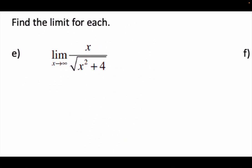Example e: limit as x approaches positive infinity of x over √(x² + 4). Top heavy, bottom heavy, equally distributed? It's actually equally distributed — because you're taking the square root of x squared. The big dog on top is x to the first power. The big dog on bottom is √(x²), which equals x. So it's x over x — equally distributed. Coefficient on top is 1, coefficient on bottom is 1. The limit is 1.